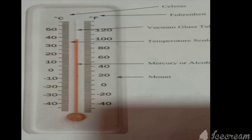Mercury or alcohol is used in the thermometers. This is the red part. Can you see this is the mercury or alcohol that is used in the thermometer?